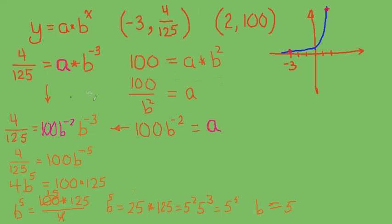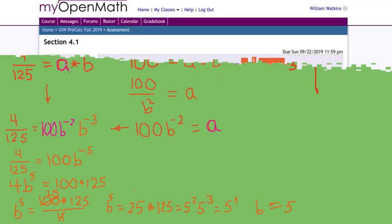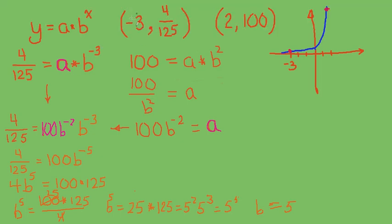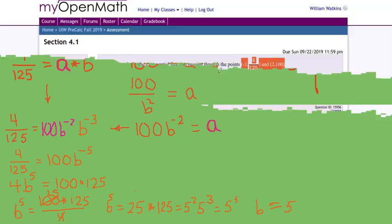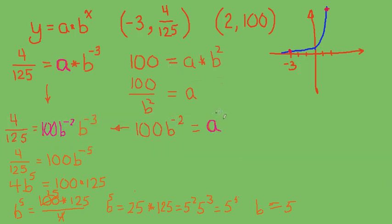So I looked at the equation of those two, I looked at what would have to happen. 4/125 would have to be equal to a times b to the -3 power, and 100 would have to be equal to a times b to the 2nd power if this equation went through those two points. We solved one of the equations for one of the unknowns, substituted that value into the other equation and cleaned that up, and we now know what b is.